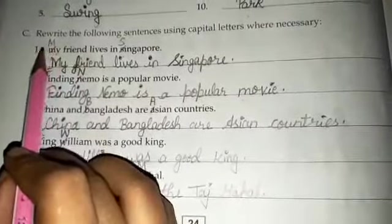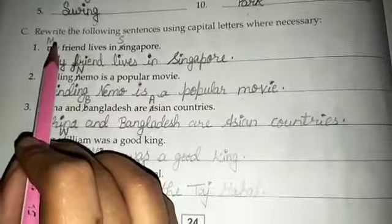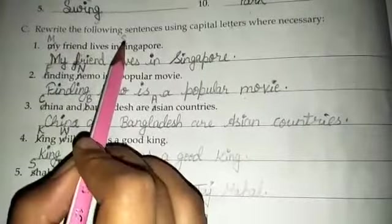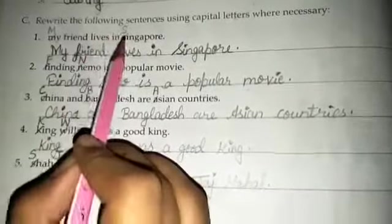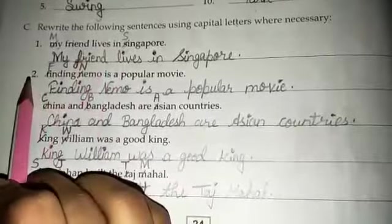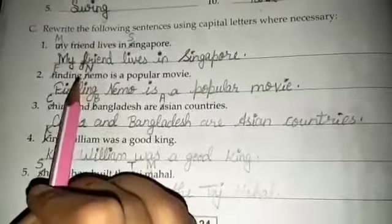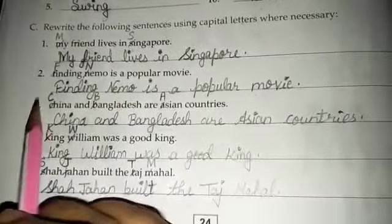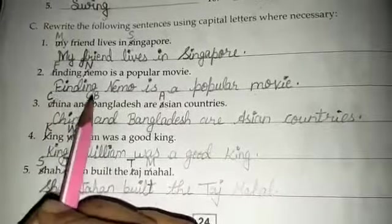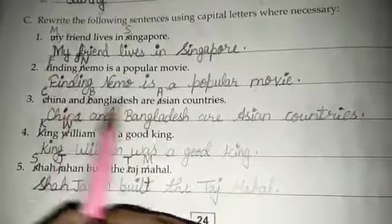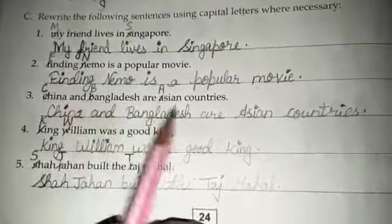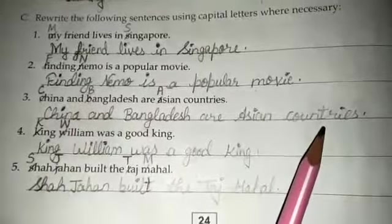Once again I am going to repeat the answers. Number 1: M and S will be capital letters, rest will be same. Number 2: F and N will be capital letters, rest will be same. Number 3: C, B, and A will be capital letters, rest will be same.